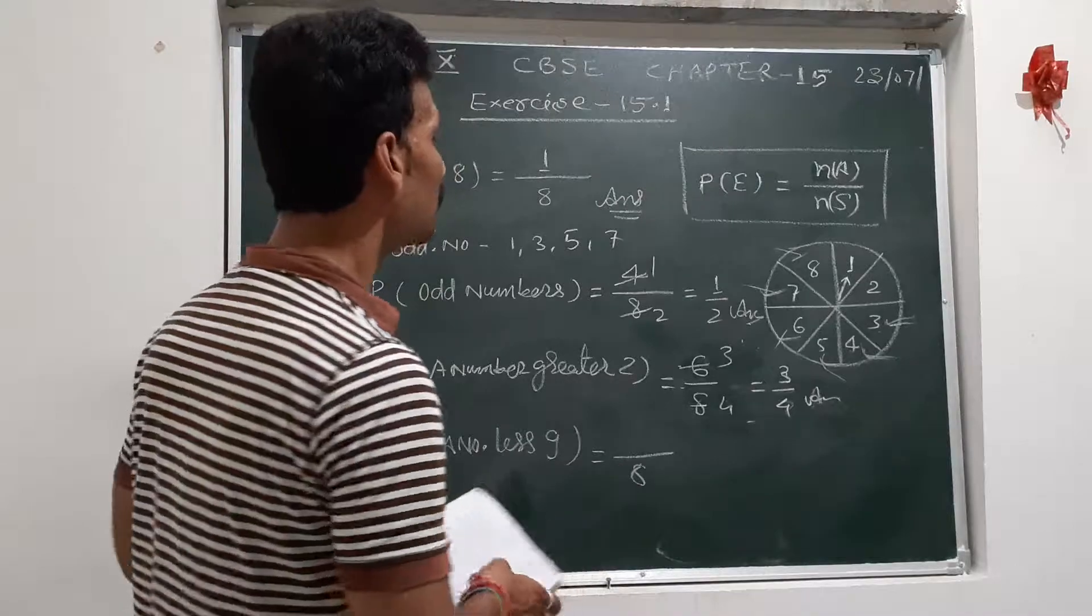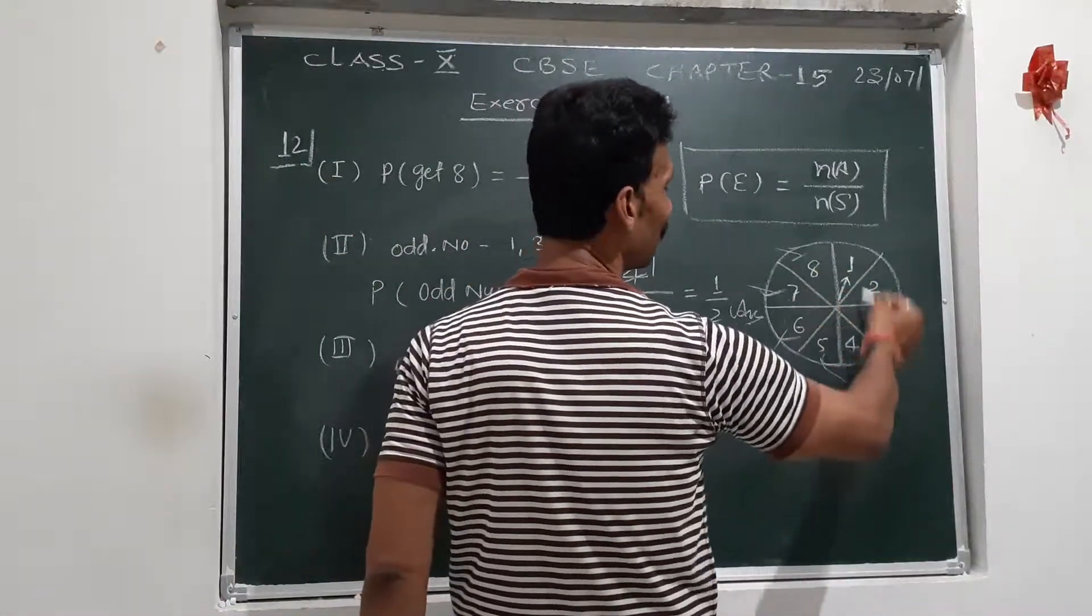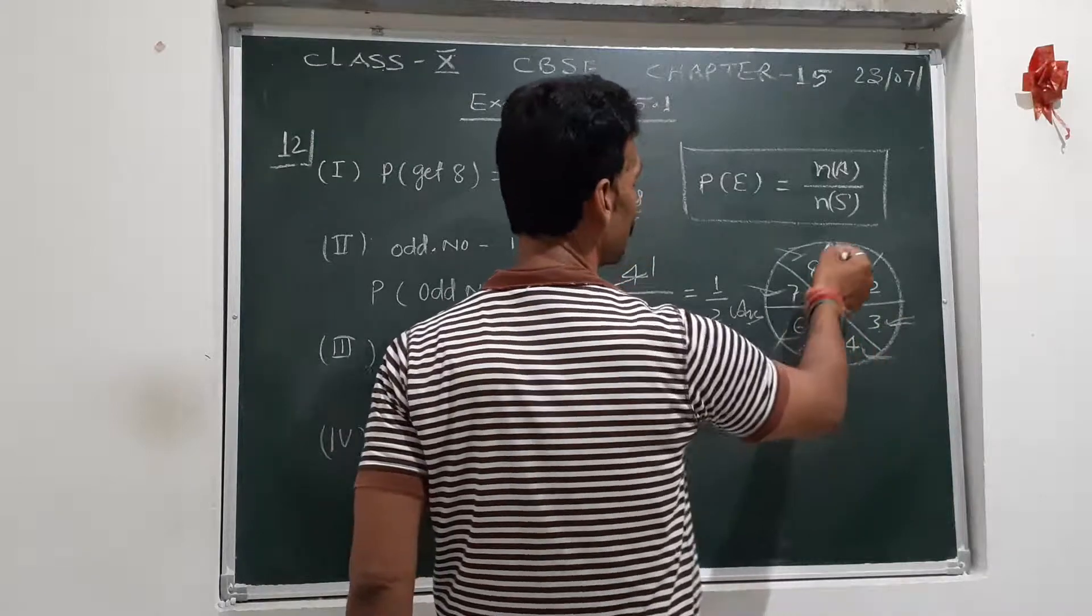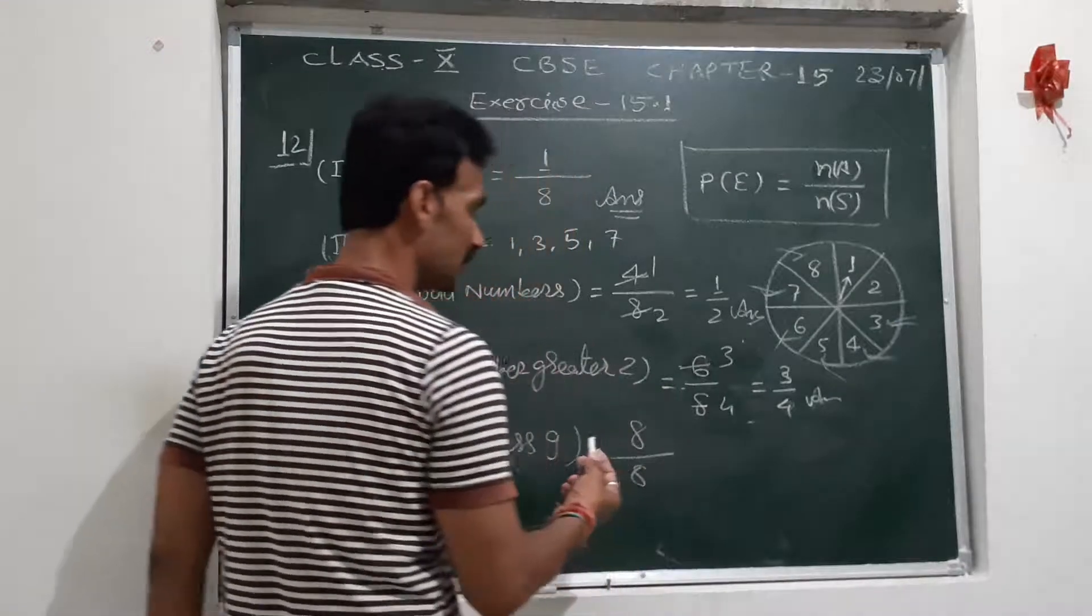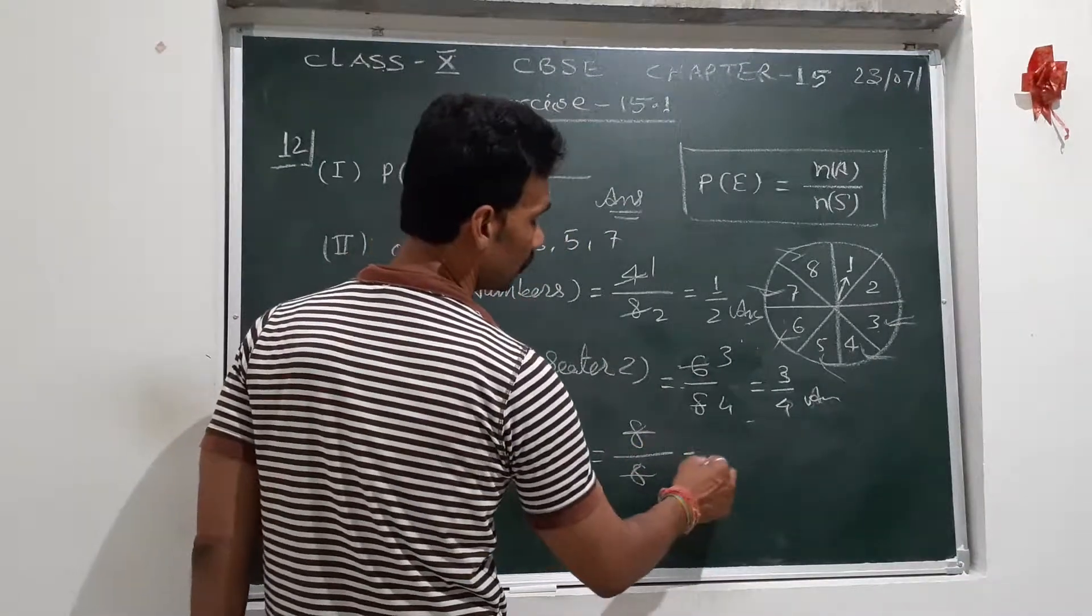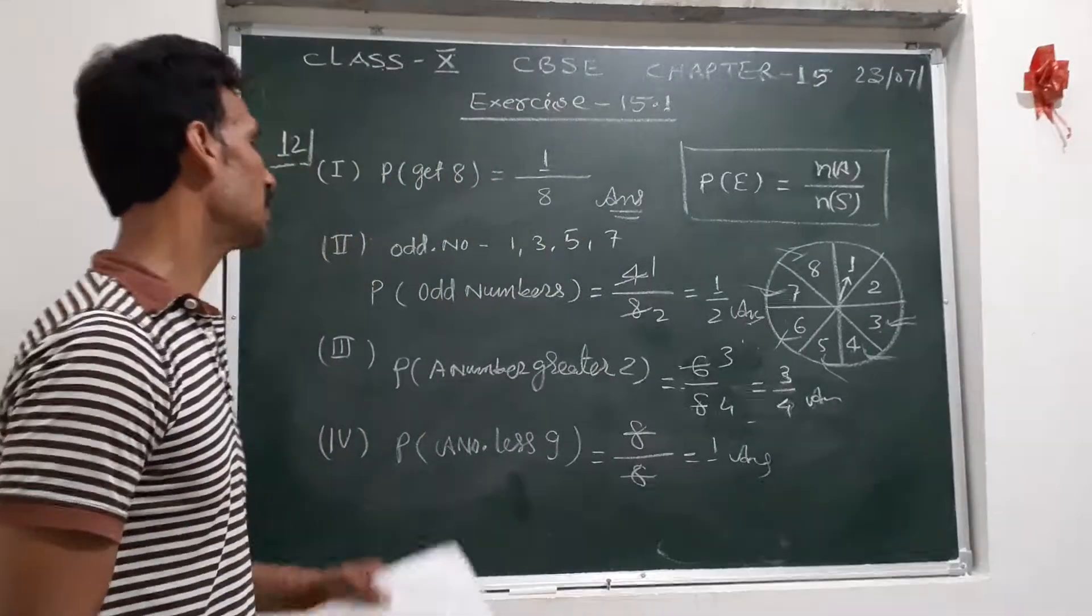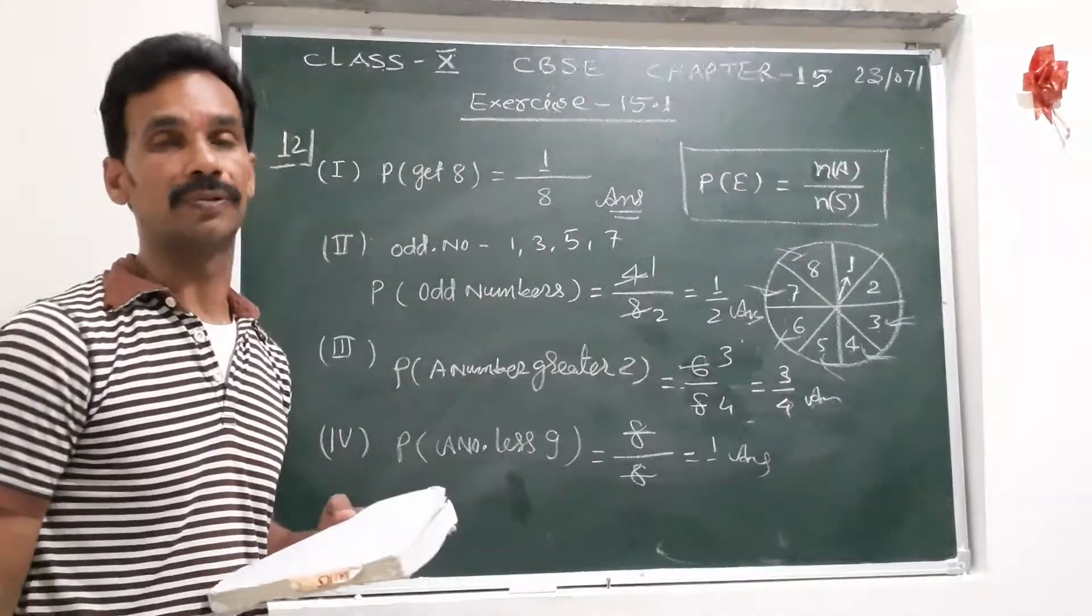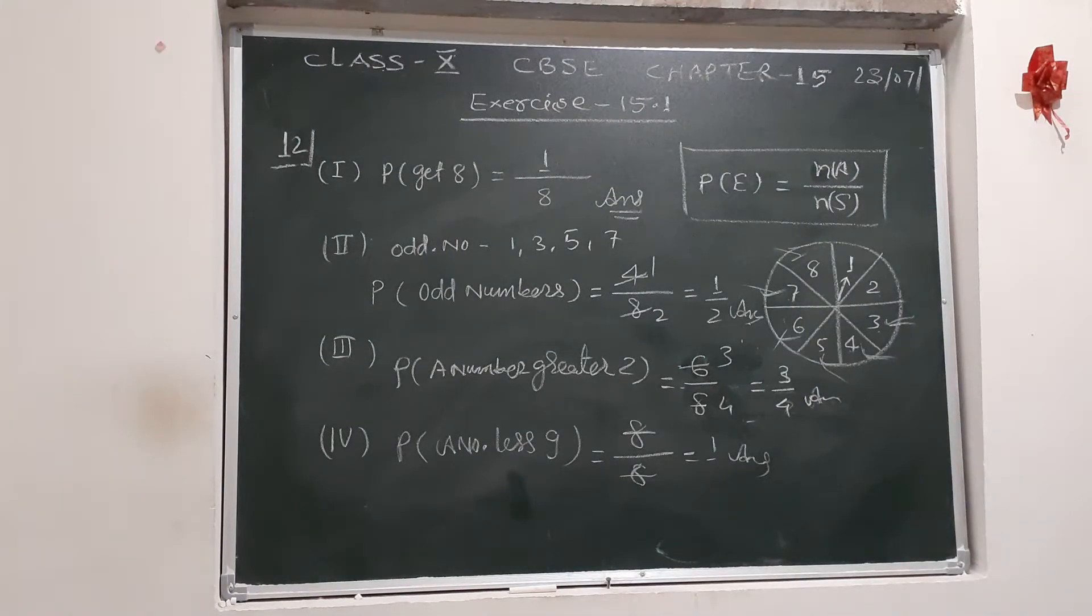All eight numbers: one, two, three, four, five, six, seven, eight - all are less than 9. So total favorable cases is 8 out of 8, which equals 1. Thank you.